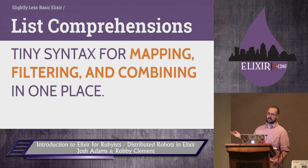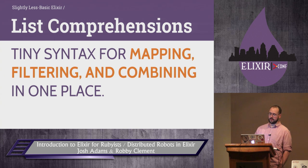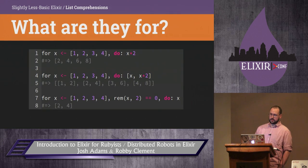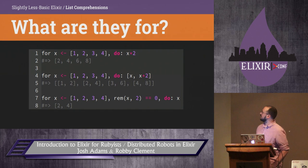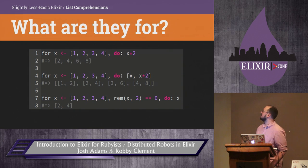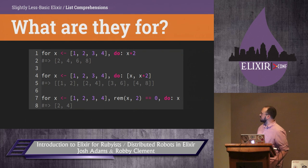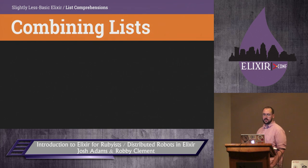List comprehensions are a syntax for mapping, filtering, and combining all in one. For x in this list, do x times 2, and it'll return a new list. In a second example you can return a new list with two elements. In a third example you can filter out things that are not even. It's pretty nice. You can also combine lists — for all the x in 1, 2, 3 and y in 4, 5, 6, show me their multiples.